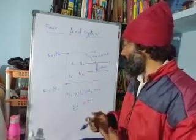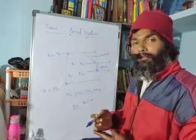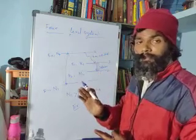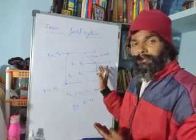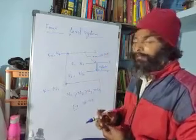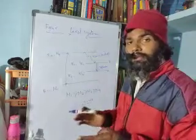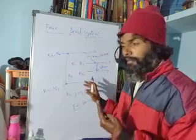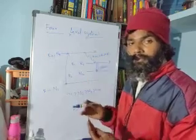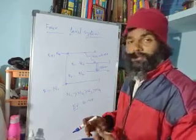Population inversion between levels 3 and 2 in the four-level system can be achieved very easily, and the threshold power for lasing is much lower in a four-level system compared to a three-level system, due to Boltzmann statistics.